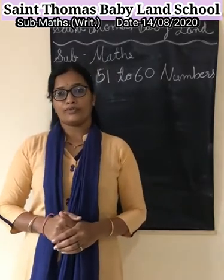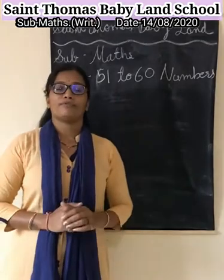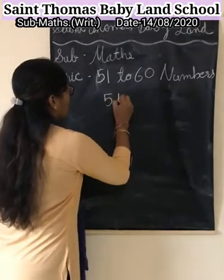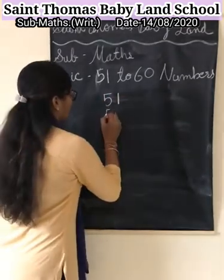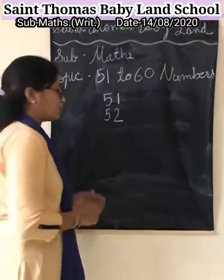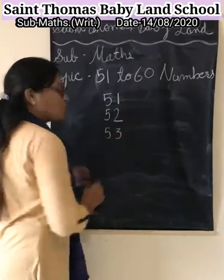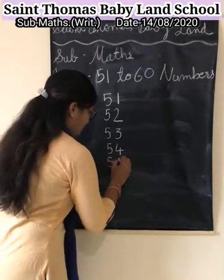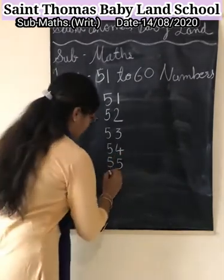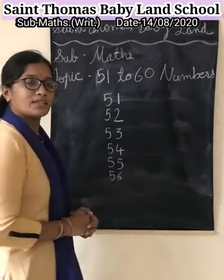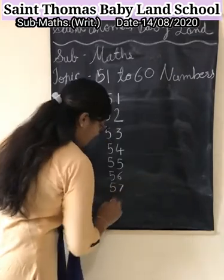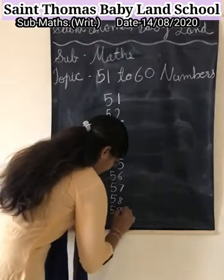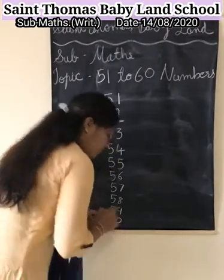Okay children, now all of you look at the board. Here I write 51 to 60 numbers. First: 5, 1 — 51. 5, 2 — 52. 5, 3 — 53. 5, 4 — 54. 5, 5 — 55. 5, 6 — 56. 5, 7 — 57. 5, 8 — 58. 5, 9 — 59. And 6, 0 — 60.